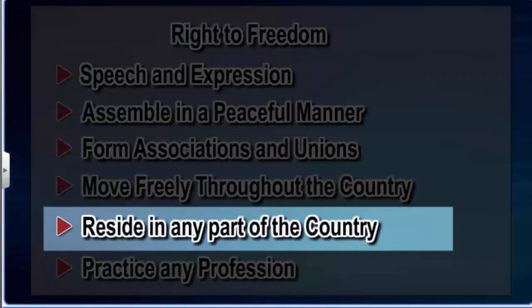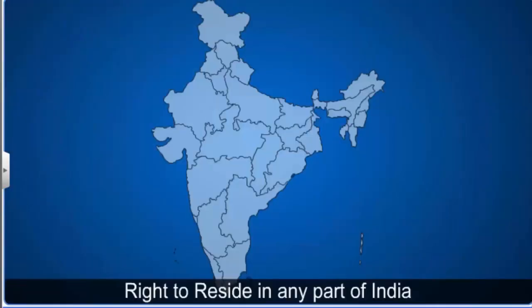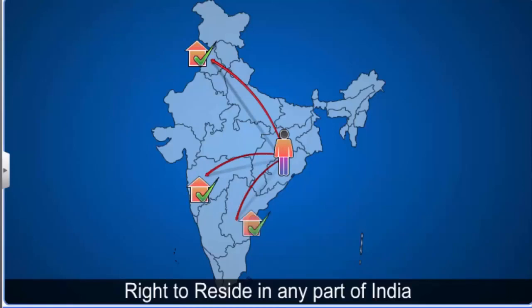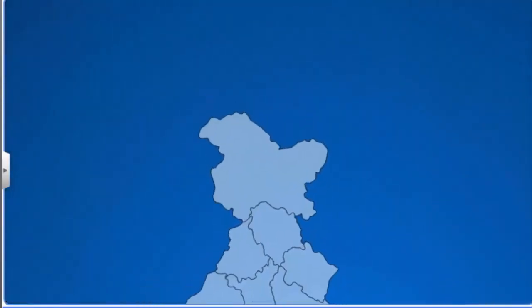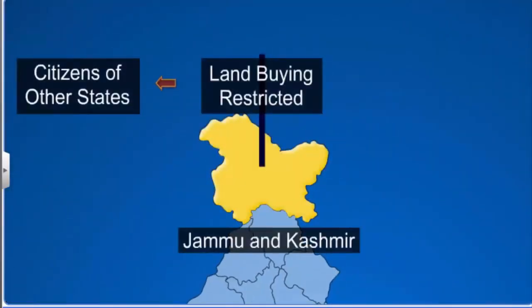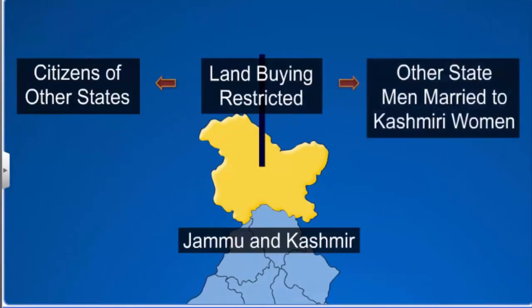Every citizen has the freedom to reside in any part of the country. For example, a person belonging to Orissa is free to live in any other state of India, such as Punjab, Maharashtra or Andhra Pradesh. However, in the interests of the general public, citizens from other states and Kashmiri women marrying men from other states are restricted from purchasing land or property in the state of Jammu and Kashmir.